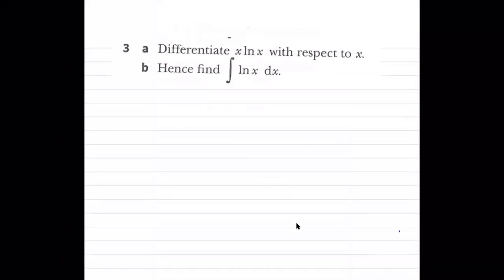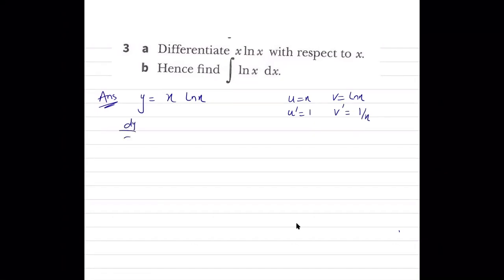Differentiate x·ln x using the product rule. Let u = x, v = ln x. Then u' = 1, v' = 1/x. So dy/dx = u·v' + v·u' = x·(1/x) + ln x·1 = 1 + ln x.